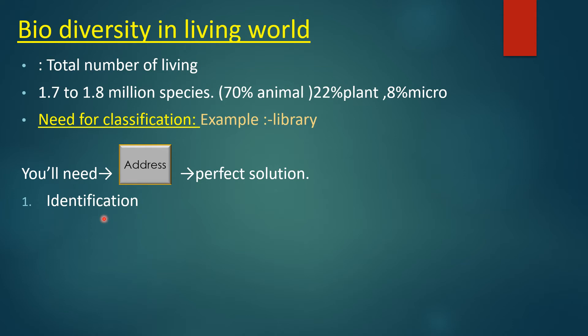इसे एक और example से समझते हैं — suppose आपके घर में बहुत सारा राशन का सामान आया और सब combined mix है. अब उन्हें separate करना है. आपने family member से कहा कि cooking oil को bathroom में रखो और hair oil को kitchen में रखो. तो family member सबसे पहले अपने mind में search out करेगा कि नहीं, cooking oil को kitchen में होना चाहिए और hair oil को bathroom में. तो सबसे पहले mind ने उस चीज़ को identify किया. तो classification की first step है: identification.